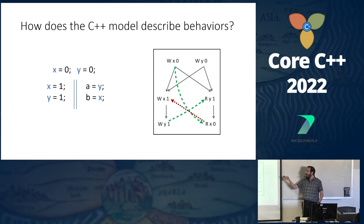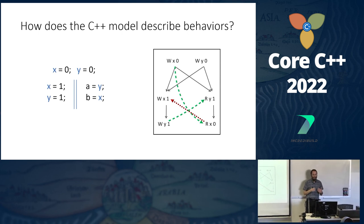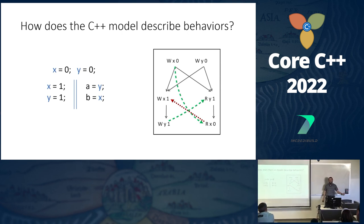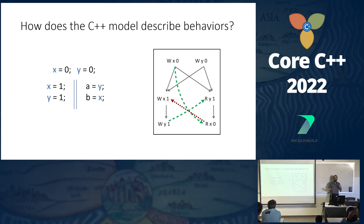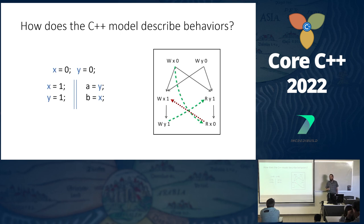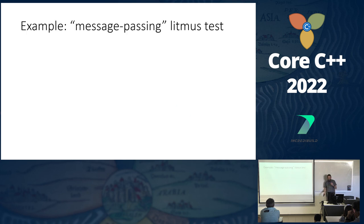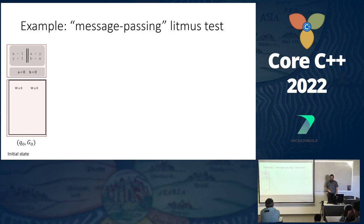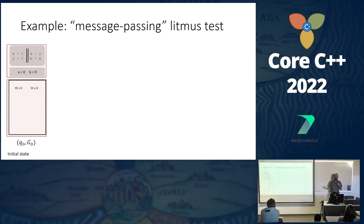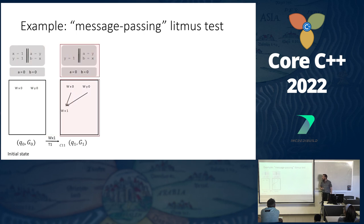Before continuing: these graphs I've been showing describe executions of the program. Rather than saying 'this statement executed, then that,' we describe it with graphs showing which events took place and what relations they have. The memory model describes what cycles are allowed or disallowed on the graph.